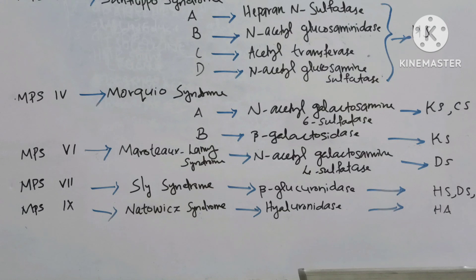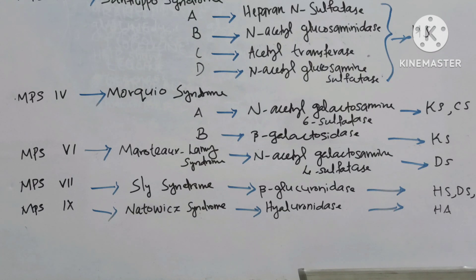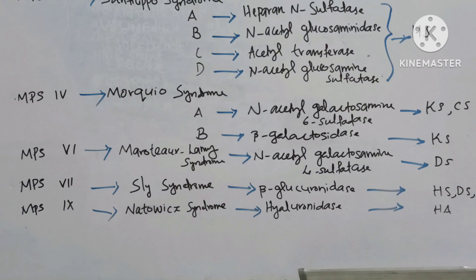MPS6, Maroteaux-Lamy syndrome. The enzyme is N-acetylgalactosamine 4-sulfatase and the accumulated product is dermatan sulfate. MPS7, Sly syndrome. The enzyme is beta-glucuronidase and the accumulated products are heparin sulfate, dermatan sulfate, and chondroitin sulfate.